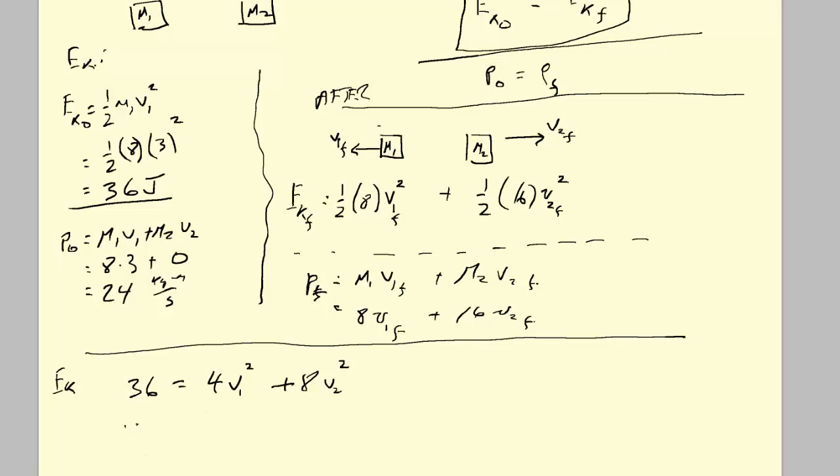The momentum relationship is 24 equals 8 V1 plus 16 V2. This is why this is not fun. We have two equations, two unknowns, and worse, it's quadratic because these guys are squared. So unless it's our lucky day, this is not going to be fun to solve.